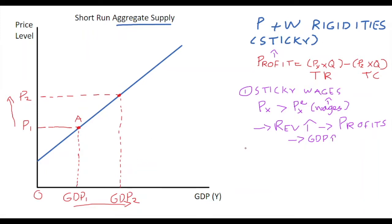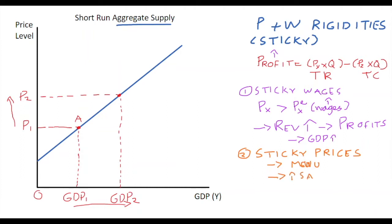That is not the only theory. We also have a theory called sticky prices. Some firms have prices set at a particular level — for example, restaurants with a set menu. With a set menu, prices don't change that often, so when the general price level goes up in the economy unexpectedly, some firms like the restaurant don't change immediately. They have relatively low prices, which tends to cause an increase in their sales, meaning their GDP contribution and the country's overall GDP can tend to increase.